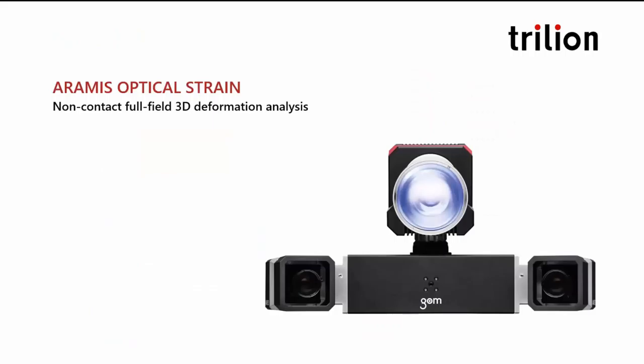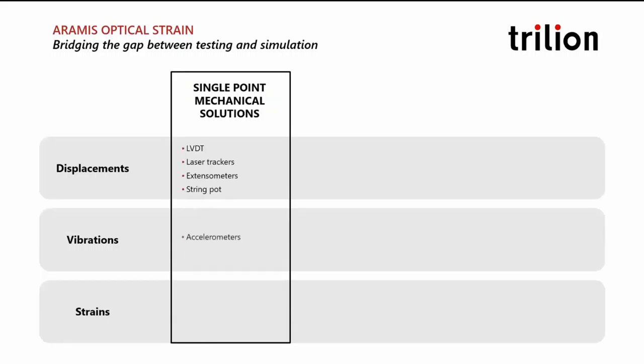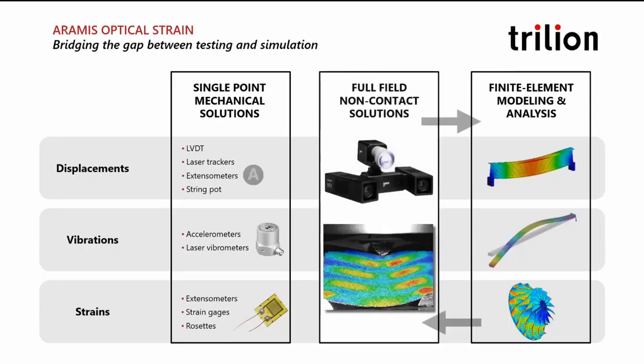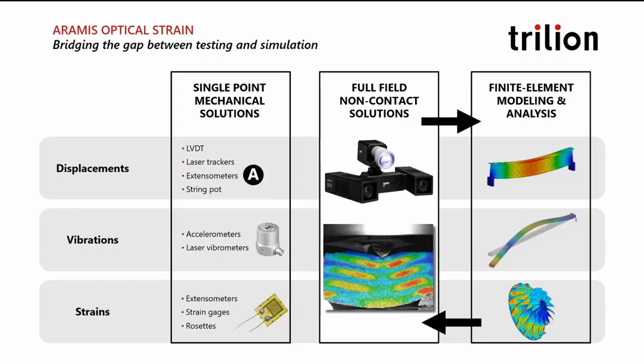We're going to start by covering ARAMIS, which is our most used system in our region. This is a system for non-contact full-field 3D deformation analysis. Traditionally, engineers are using mechanical point solutions such as extensometers, accelerometers, and strain gauges, which give you data on only one point. We turn to finite element modeling and analysis, but simulations are only as good as our assumptions. This is where ARAMIS comes in to bridge the gap between testing and simulation.